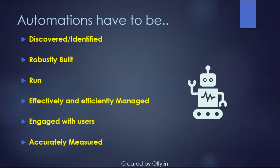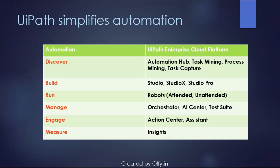When it comes to automation, there are a few things needed to build a successful automation pipeline. Automations have to be discovered and identified, robustly built, then reliably run. They have to be effectively and efficiently managed, engaged with users, and accurately measured. UiPath simplifies RPA by incorporating each of these automation steps in their enterprise cloud platform.